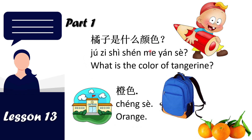So 橘子是什么颜色 means 'What is the color of tangerine?' and 橘色 is orange. Let's read together: 橘子是什么颜色 — 橘色.